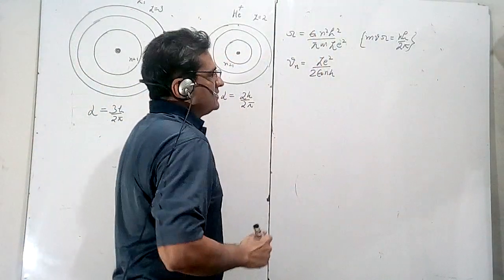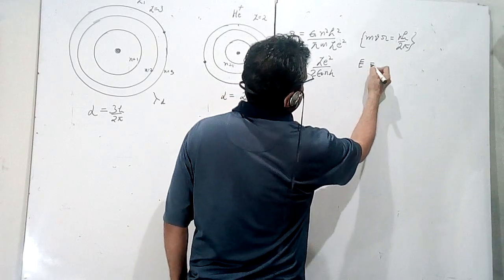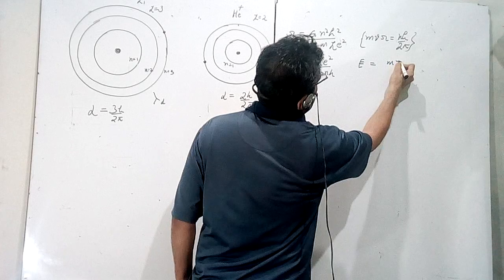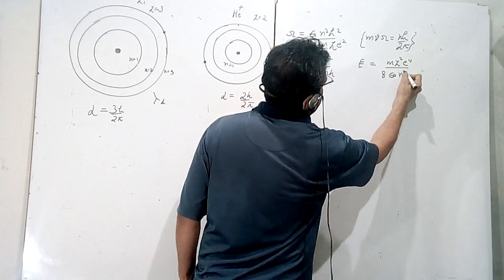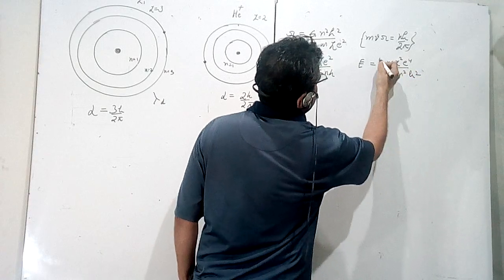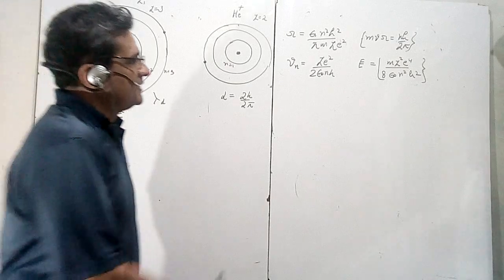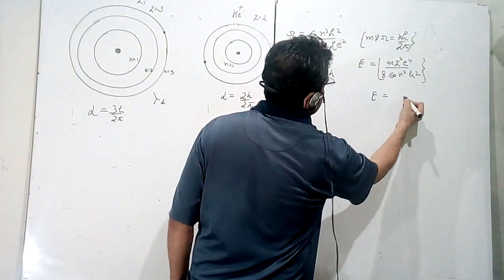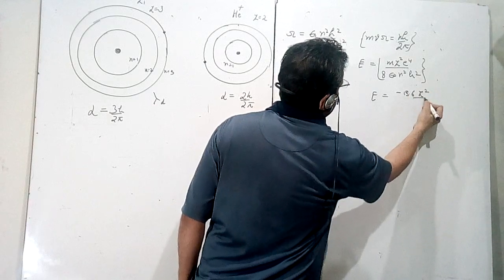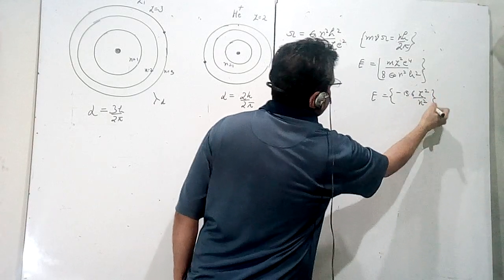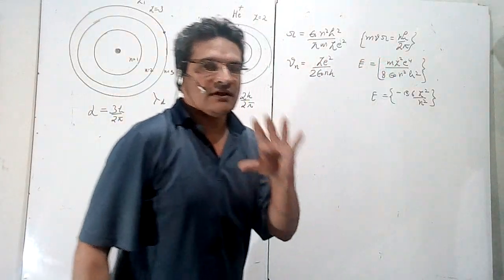One more formula to remember is for energy: E = mz²e⁴ / 8ε₀²h²n². This is also very important, and from it you get the equation E = −13.6 z² / n² eV. These formulas can be applied for any hydrogen-like atom.